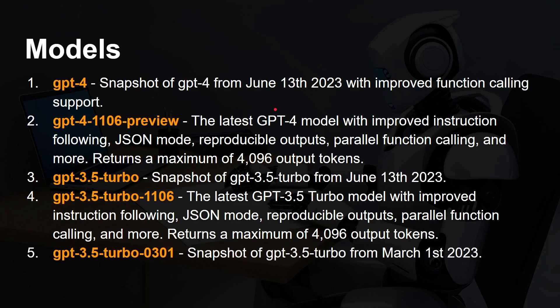And then there's also an older one from March. Notice that some of the dates — like 0301 — indicate March the 1st. So these are all different model dates up to around November the 11th. This older March model is one you can still use, and we're going to test the capabilities and the speed of all of these in this video.